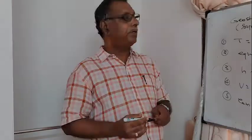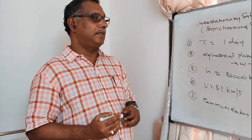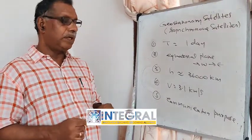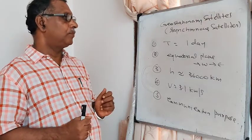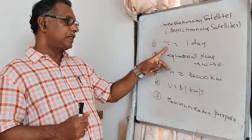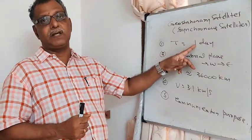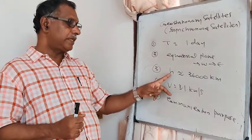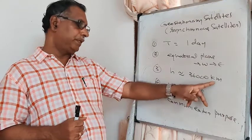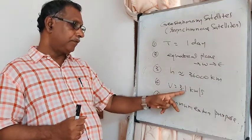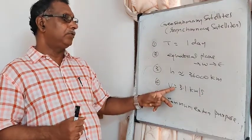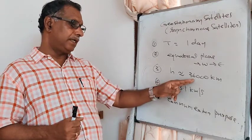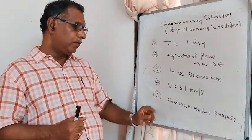Geostationary satellites are mainly used for communication. Key points: their period is one day (same as Earth's rotation); they revolve in the equatorial plane from west to east; their height is approximately 36,000 km; and their orbital speed is about 3.1 km/s.